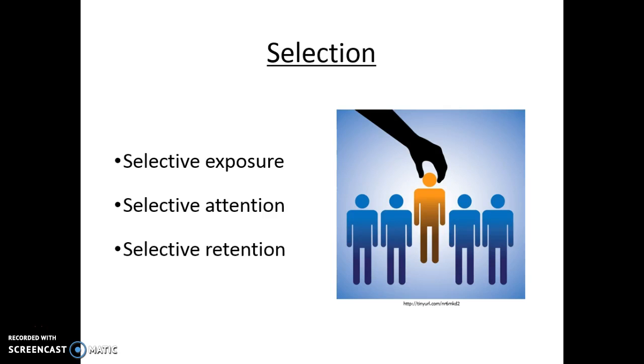And then there's selective retention. This is when we process, store, and retrieve information that we've already selected, organized, and interpreted. But usually we only want to retrieve the pleasant things and tend to forget the negative things. We tend to remember the negative things if they were really impactful, though.